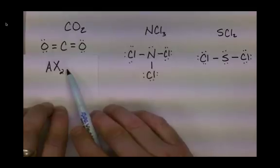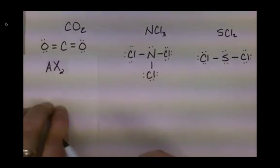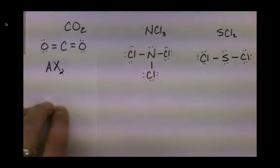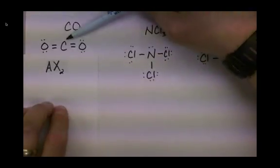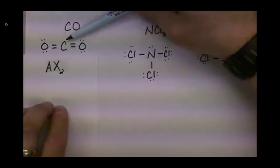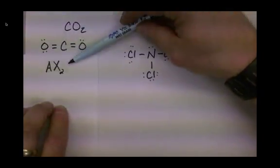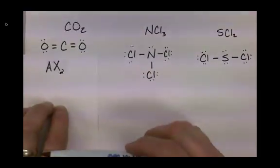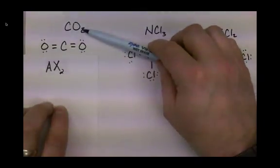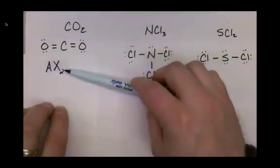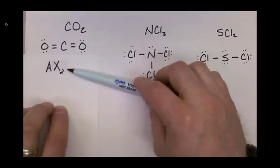The E in our VSEPR notation represents the number of lone pairs on the central atom. Since this carbon does not have any lone pairs, we leave it off. So our VSEPR notation for carbon dioxide would be AX2.